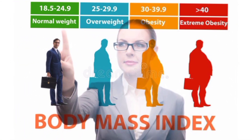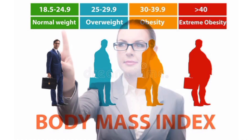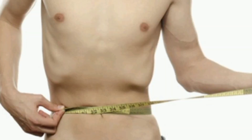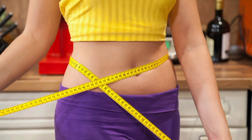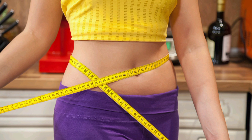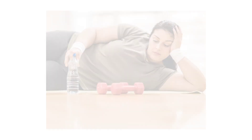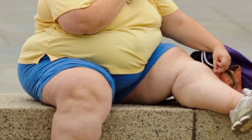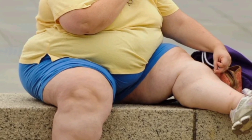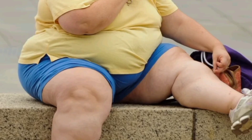The BMI ranges are: underweight, normal weight, overweight, and obesity. Underweight is below 18.5. A BMI of 18.5 to 24.9 is considered normal weight. Overweight is 25 to 29.9, and above 30 is considered obesity, which can lead to many health conditions.